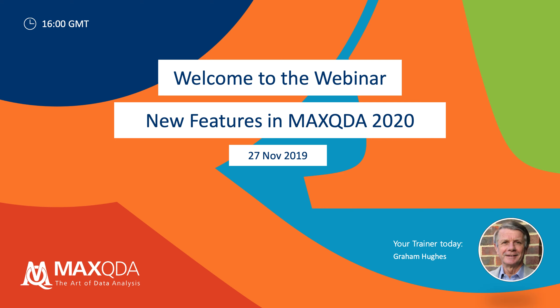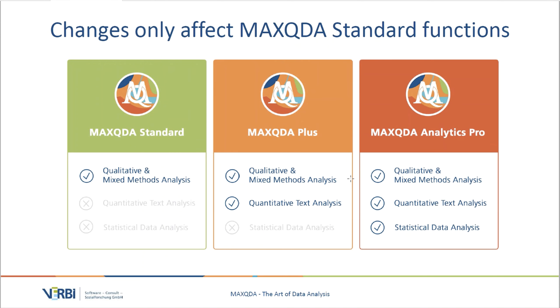I'll be working today with the Windows version of MAXQDA 2020. As before, the Apple Mac version is almost identical. The changes from MAXQDA 2018 to MAXQDA 2020 only affect the MAXQDA standard program — the qualitative and mixed methods analysis functions. There are no changes to the MaxDictio module, which is the quantitative text analysis module in MAXQDA Plus, and no changes to the statistics module in the Analytics Pro version.